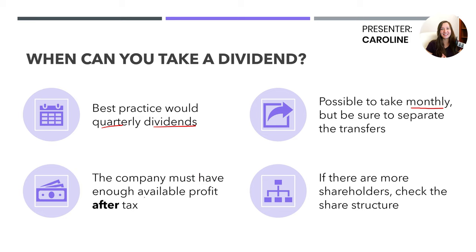The company absolutely must have enough available profit after tax. You need to factor in what corporation tax would be payable on the profit so far, and make sure that amount is taken out of the total available profit. If there are more shareholders, you'll need to pay out dividends according to the share structure. So if everyone has an ordinary £1 share and there are two shareholders, you'd be paying out 50% to each person. If you want to amend the share structure, I recommend consulting a legal service.